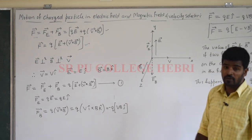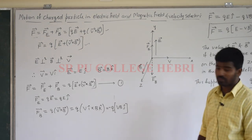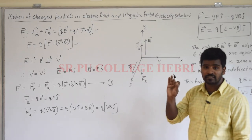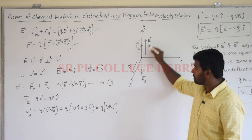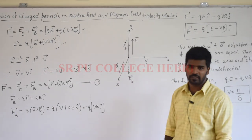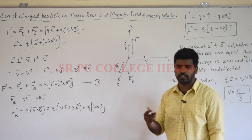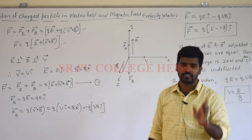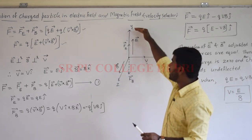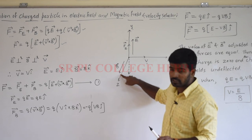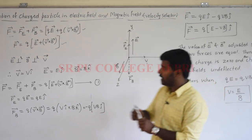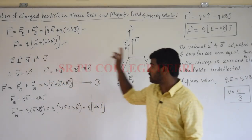The motion of the charged particle in electric and magnetic fields is expressed using a coordinate system: the x-axis is taken along the velocity, the y-axis along the electric field, and the z-axis along the magnetic field. These three axes are mutually perpendicular to each other. Therefore, the electric field is perpendicular to the magnetic field, and both are perpendicular to the velocity vector V.